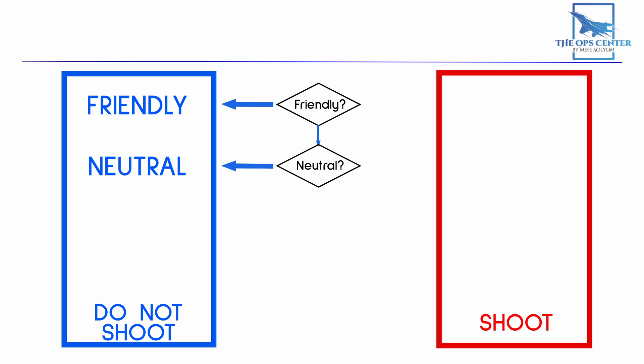Because of the risk of fratricide, we want to be very careful before authorizing a shot. For that, we need a positive indication that this is an enemy. And that can only happen with either an electromagnetic indication or a VID.